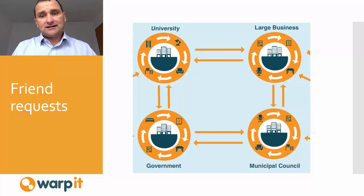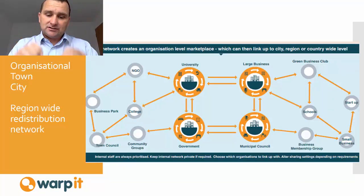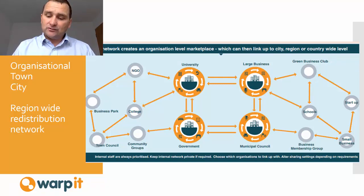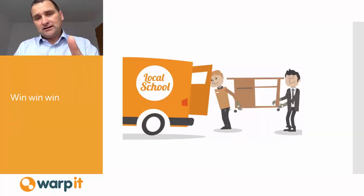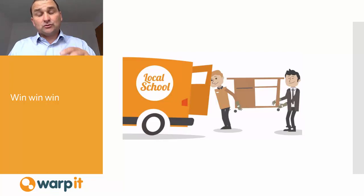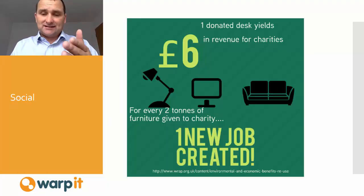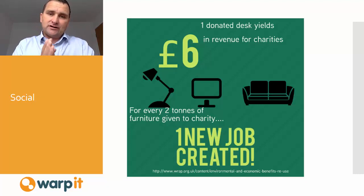In many cities and regions in the UK, we've got the big players on the system trading internally and then trading with each other. Surplus assets that don't get traded internally can drip into the community and go to schools and charities for free. Schools get it for free when a council joins; charities get it for free anyway. When you dispose of an asset into the community, it has a much greater impact.